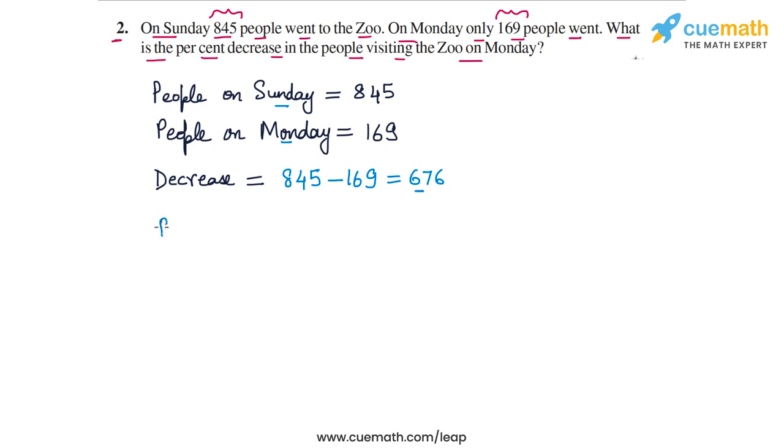So now we can find the percent decrease. The percent decrease would be, we have to take the original number of people, 845. It is on this base that the percent decrease will be calculated. And the decrease itself was 676. So the percent decrease will be the decrease by the original number 845 translated to 100. So 676 by 845 into 100. This much percent is the percent decrease.